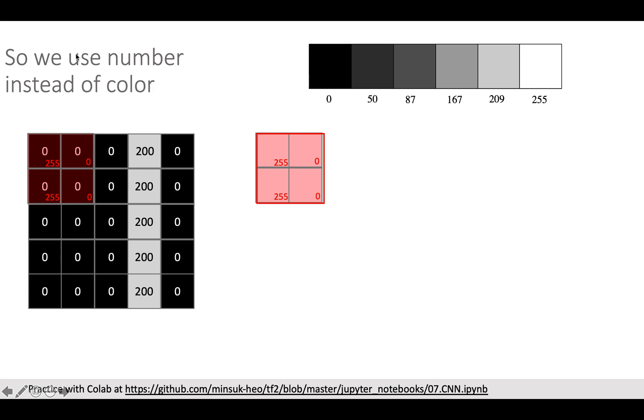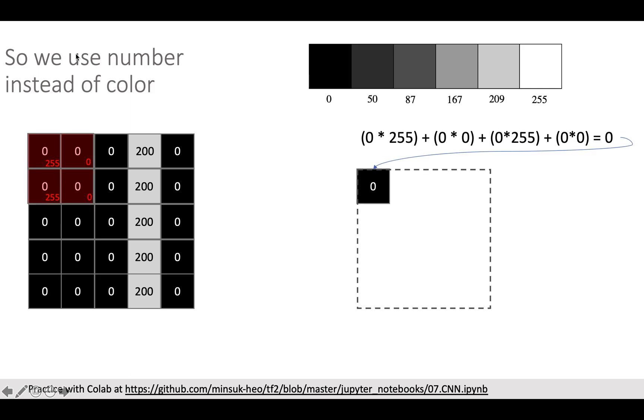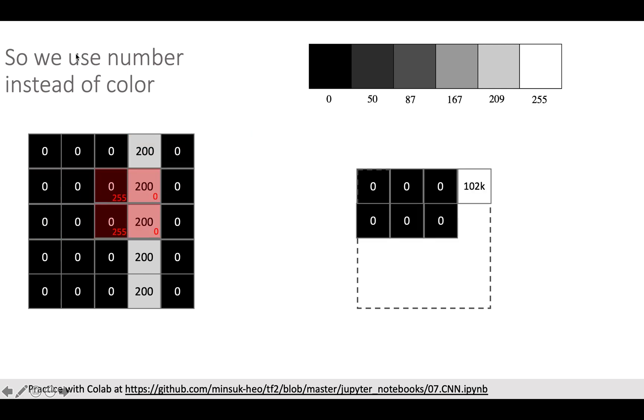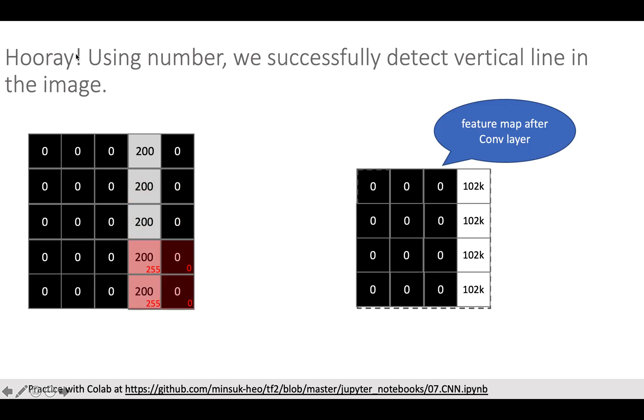So let's be smarter. We can use number instead of color. In grayscale, zero means black, 255 means white, and the more white the greater number. The kernel has 255 for detecting vertical and we just multiply the right corner value with overlapped pixel value. So 255 times 0 is 0, 0 times 0 is 0, 255 times 0 is 0, 0 times 0 is 0. And summing up these four values in one number which is 0. And do the same thing on different positions.